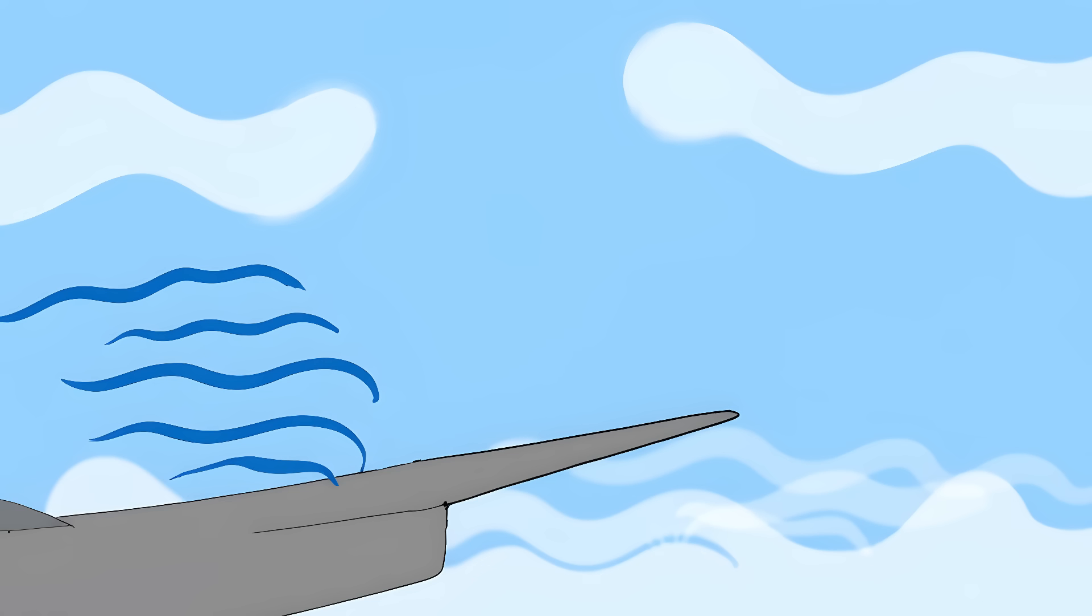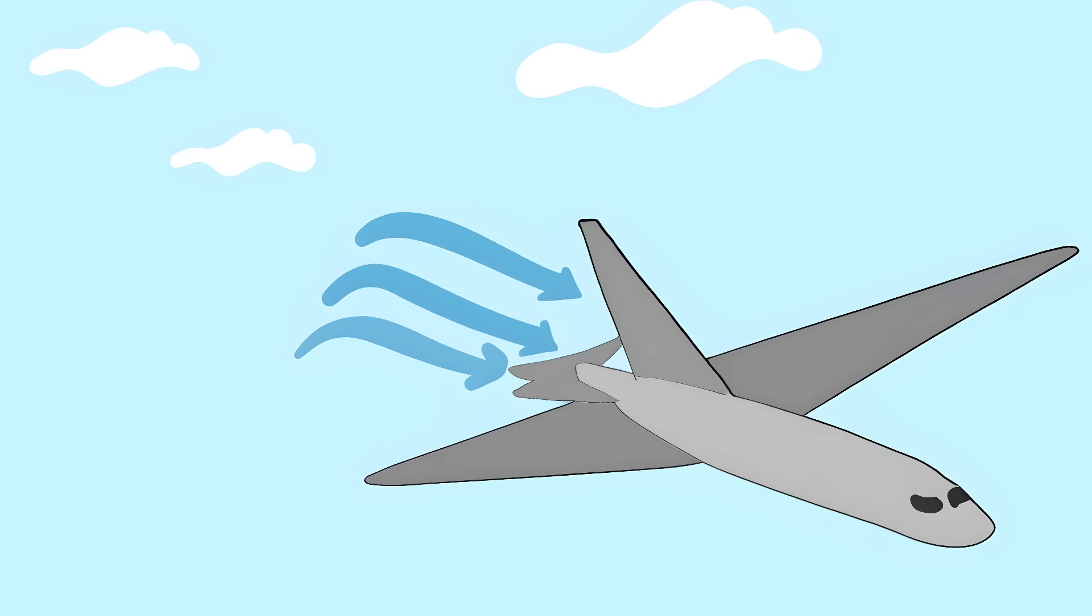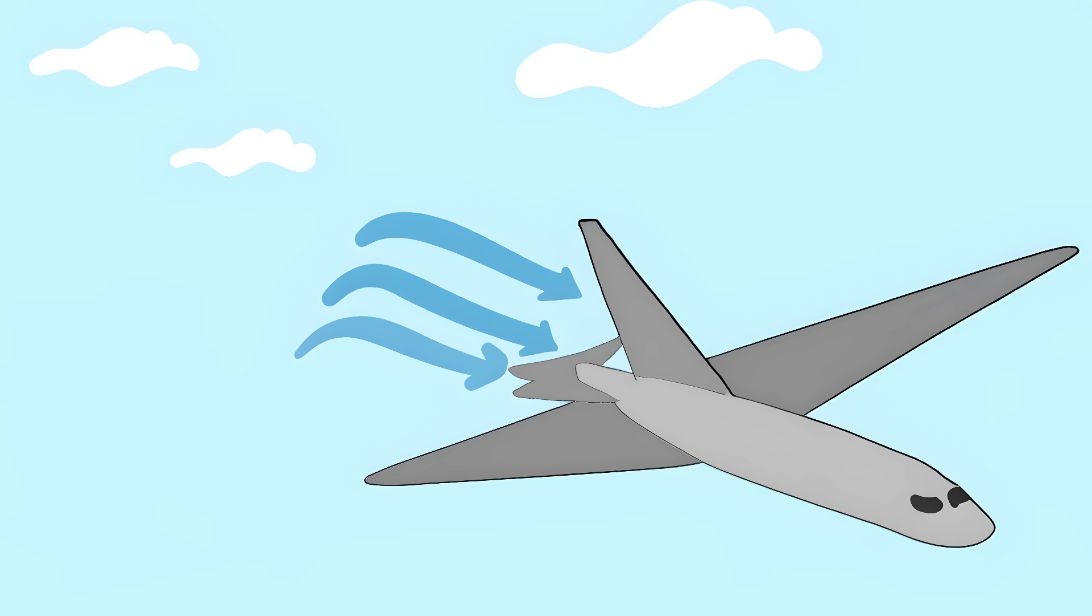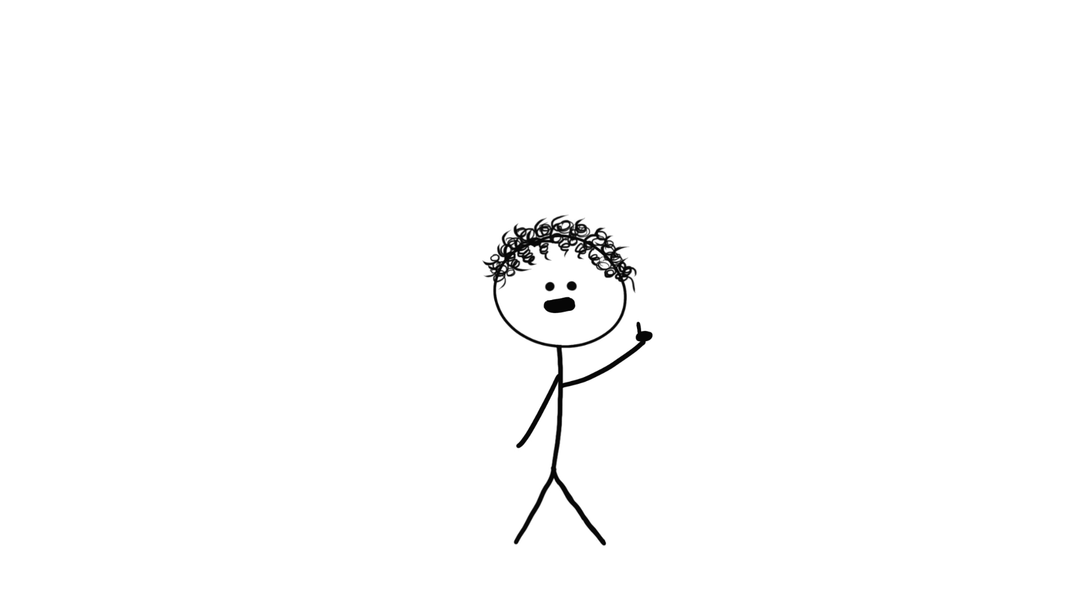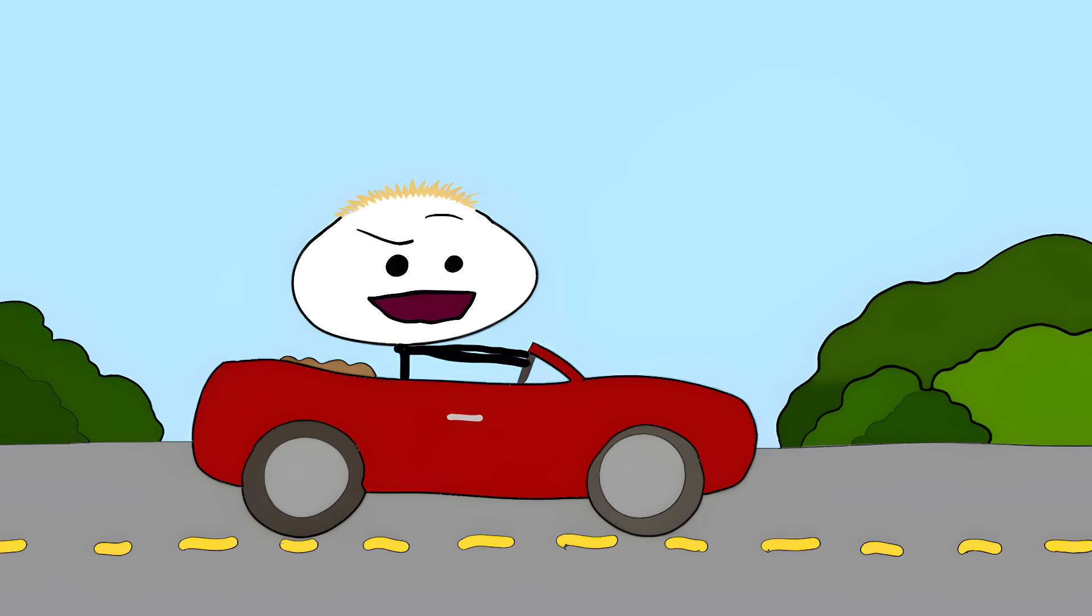The wings are shaped like curved ramps, splitting the air into two streams. When air hits them, some goes over, some goes under. The air going over the top has to travel further, so it speeds up. Fast-moving air has less pressure than slow-moving air. It's like when you stick your hand out a car window.